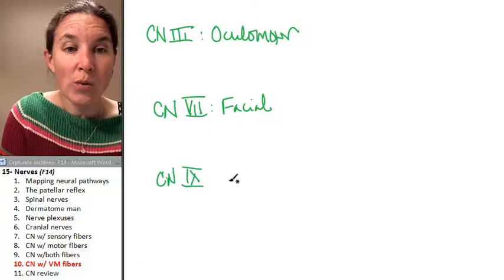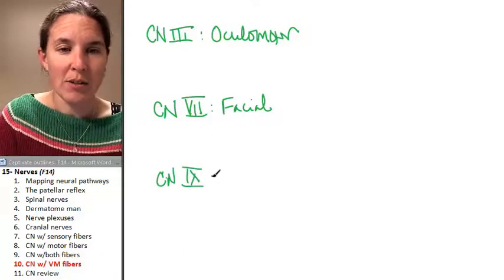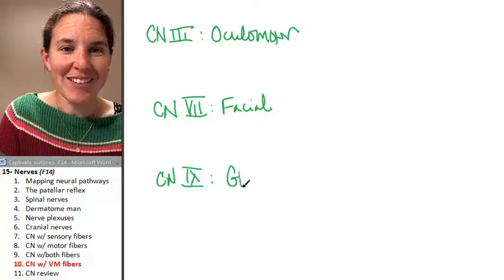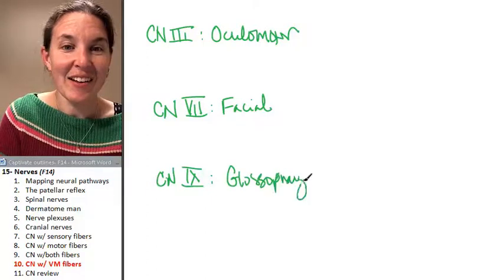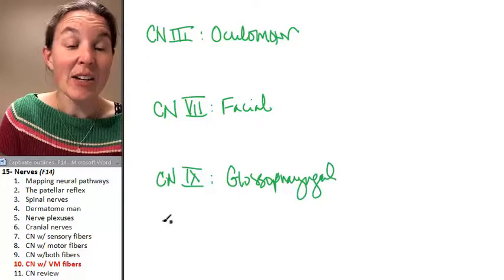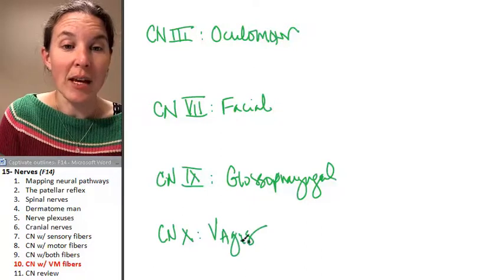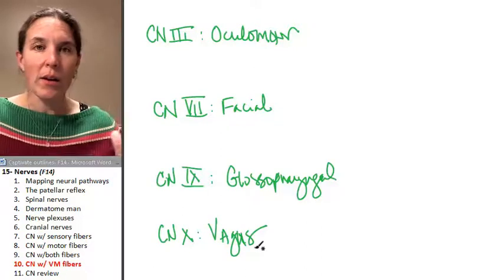Cranial nerve nine. Oh, you know nine. I was just trying to get out of the picture there. Glossopharyngeal and cranial nerve ten, V-I and only, vagus. What do they do?